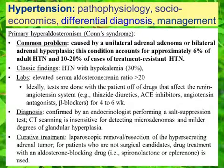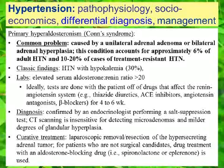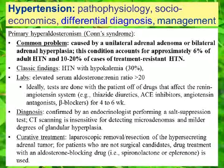A very important cause of hypertension is Conn's Syndrome, more generally known as primary hyperaldosteronism. This is a common problem caused by a unilateral adrenal adenoma or bilateral adrenal hyperplasia. This condition accounts for approximately 6% of adult hypertension and 10 to 20% of cases of treatment-resistant hypertension.